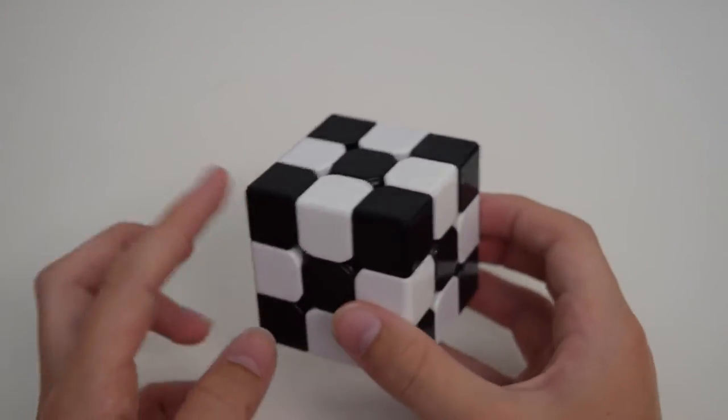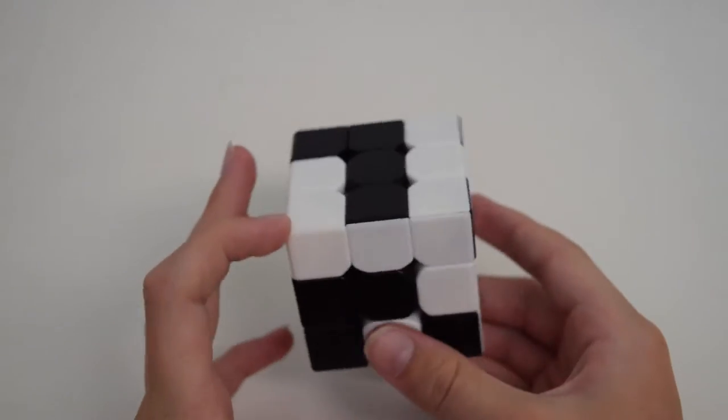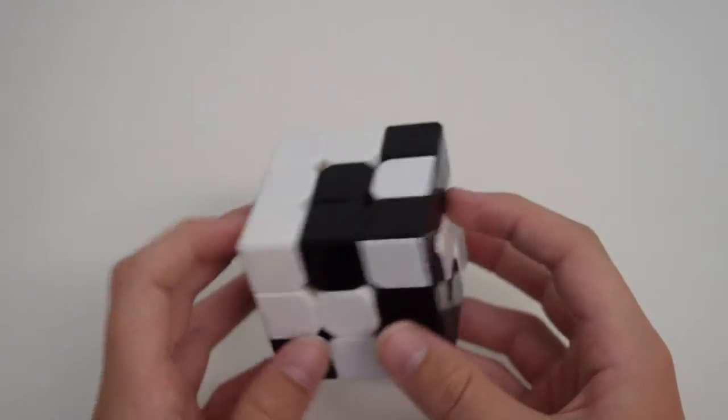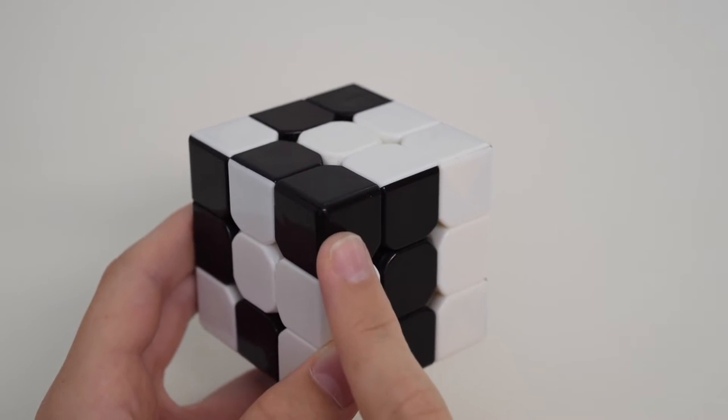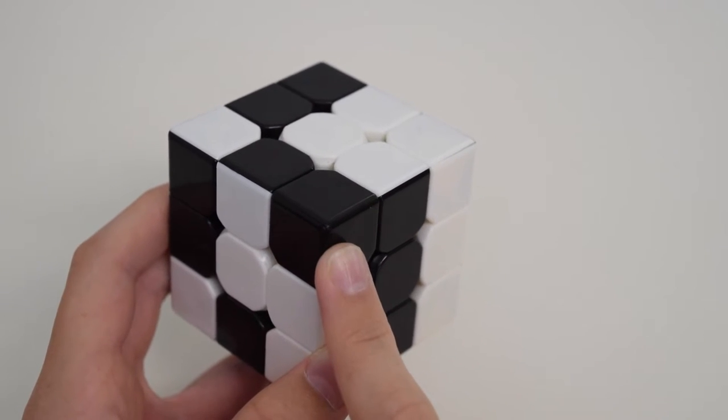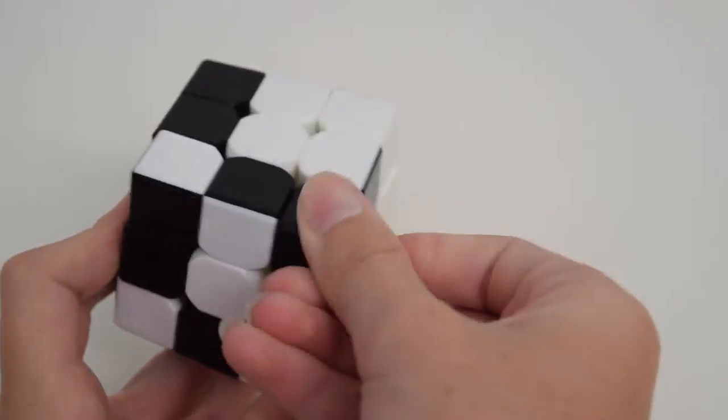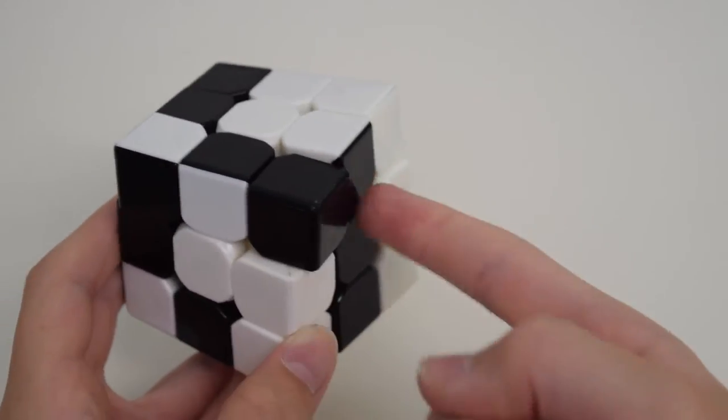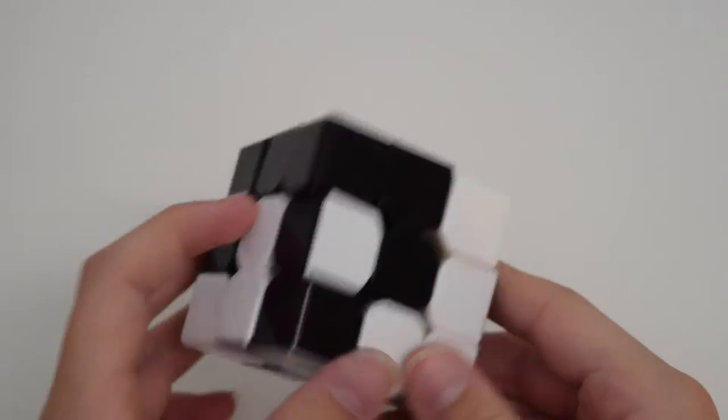So how is this solved on this puzzle? It's very different from that of a 3x3, seeing that there are many more parity errors that you can get. This is because, for example, this corner is all black, you don't know what orientation it's supposed to be in. It could be in this orientation, that orientation, that orientation, and they all look the same, so you never know what you're going to get.